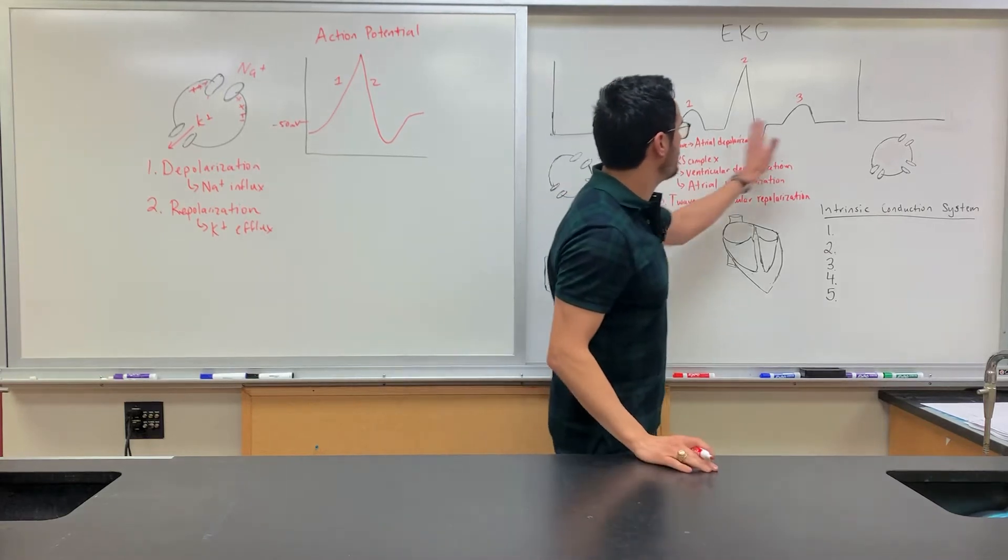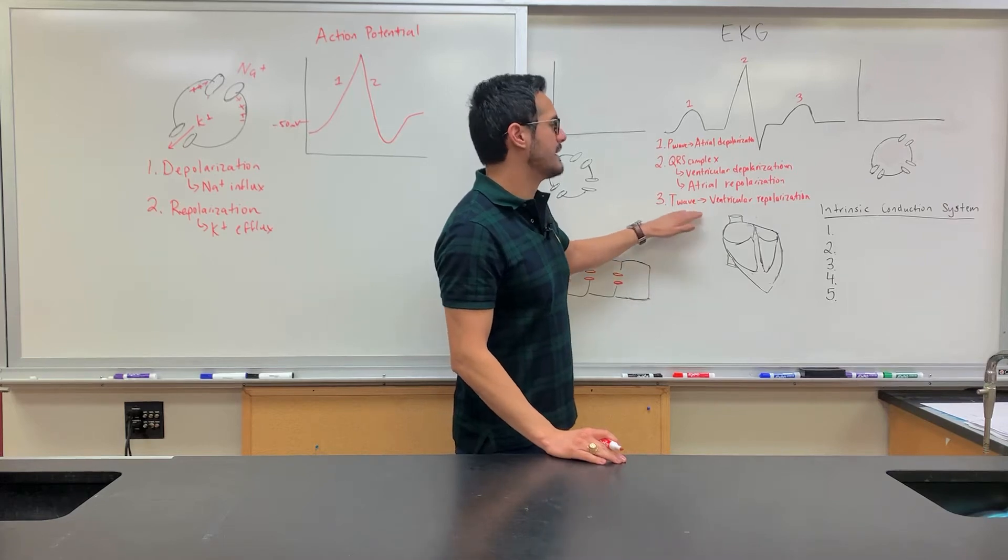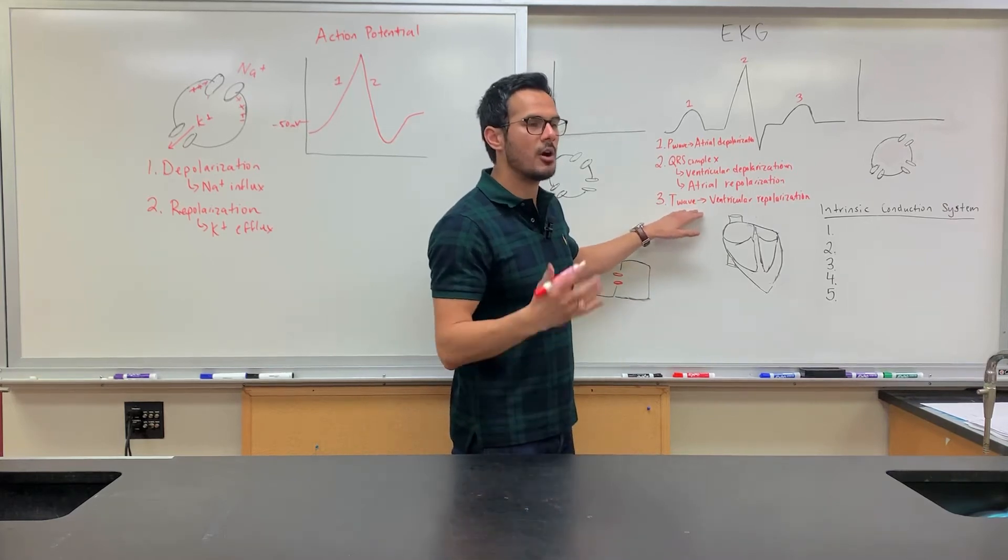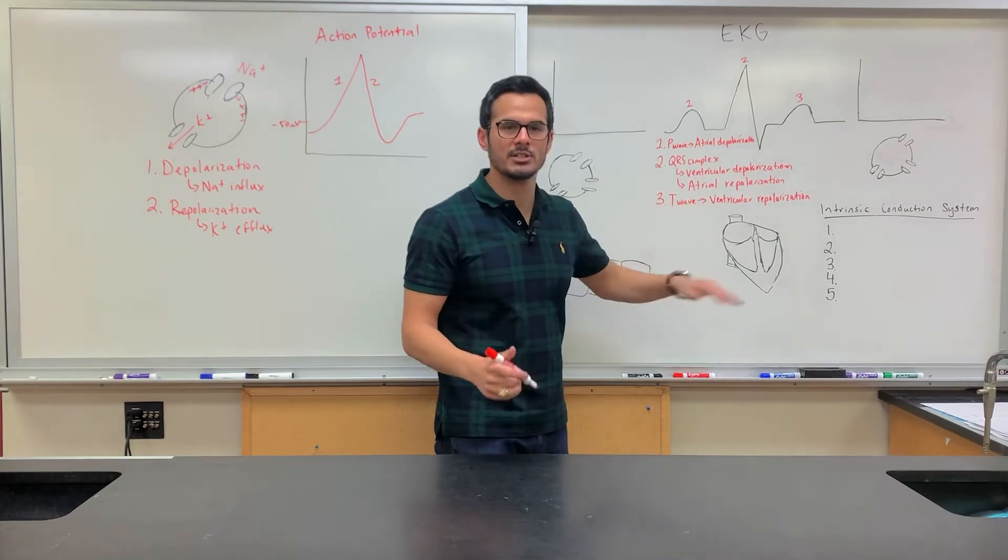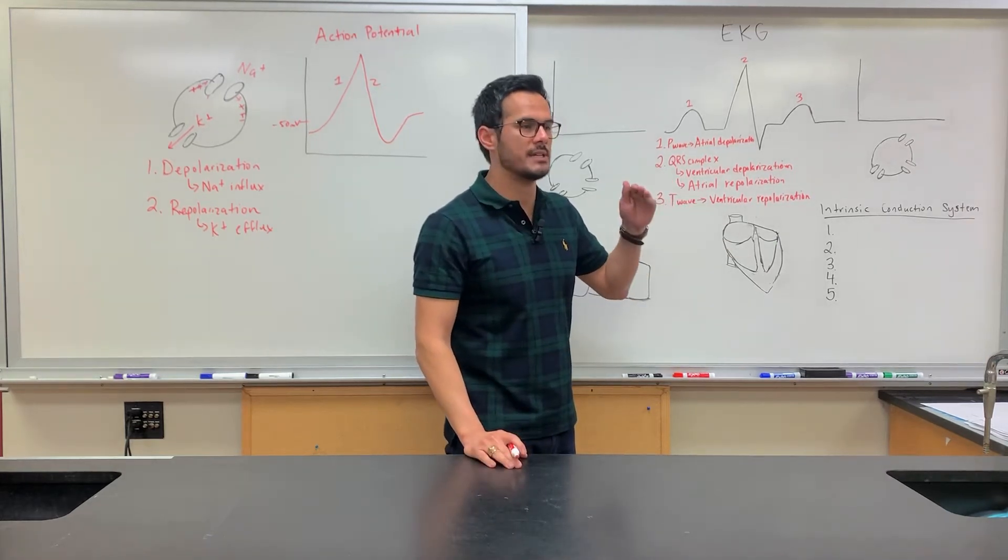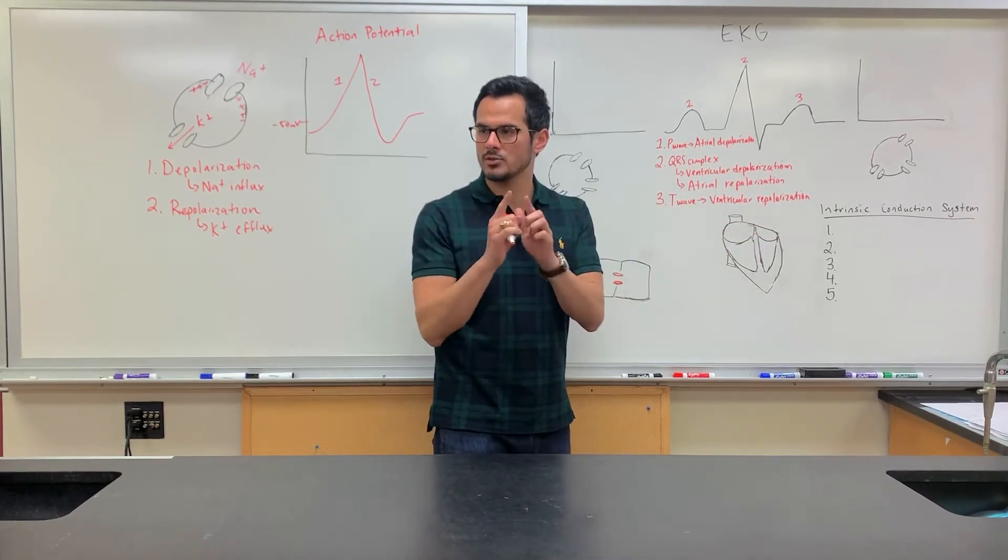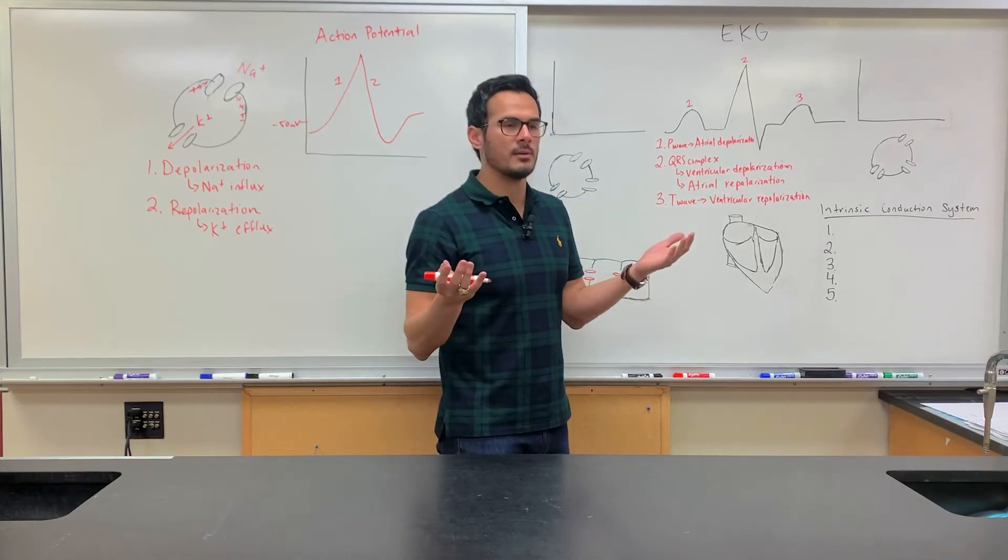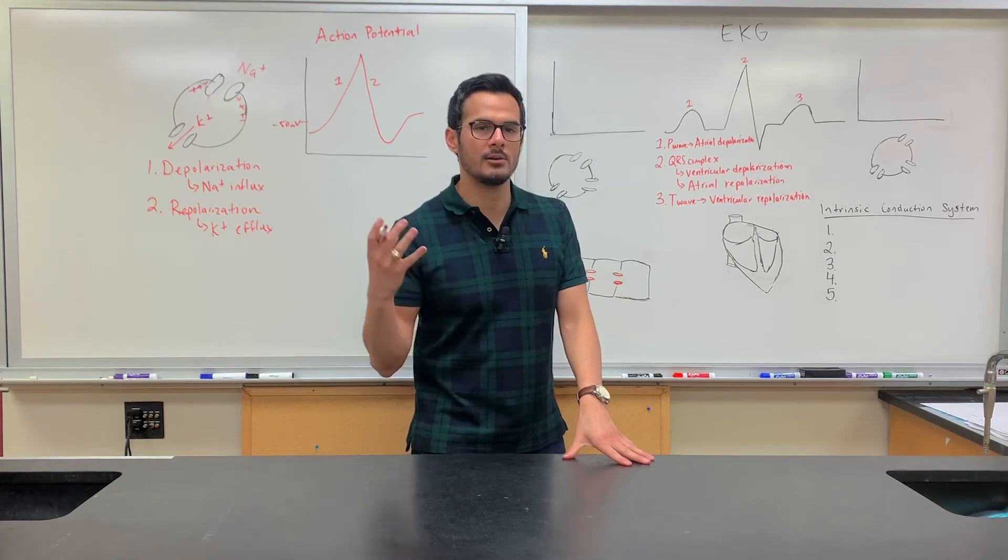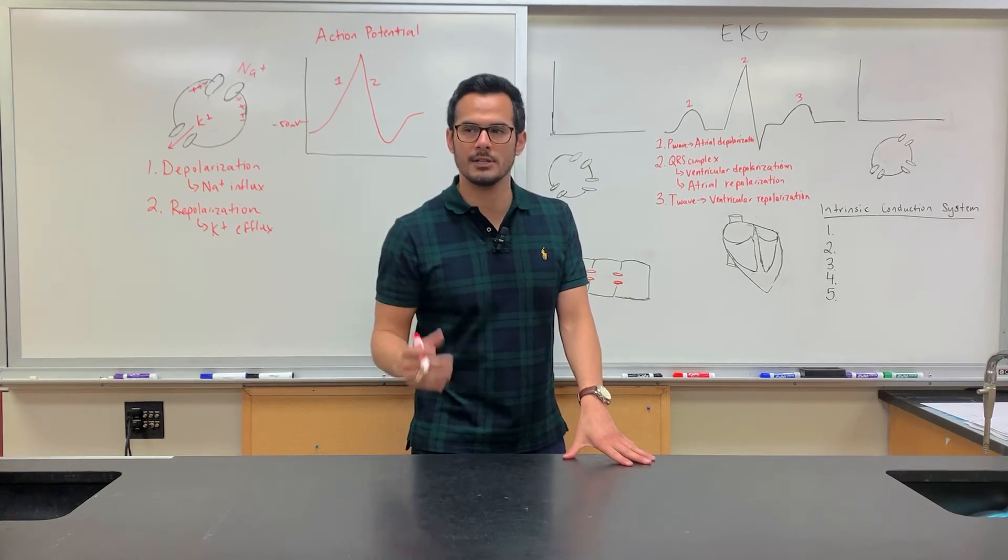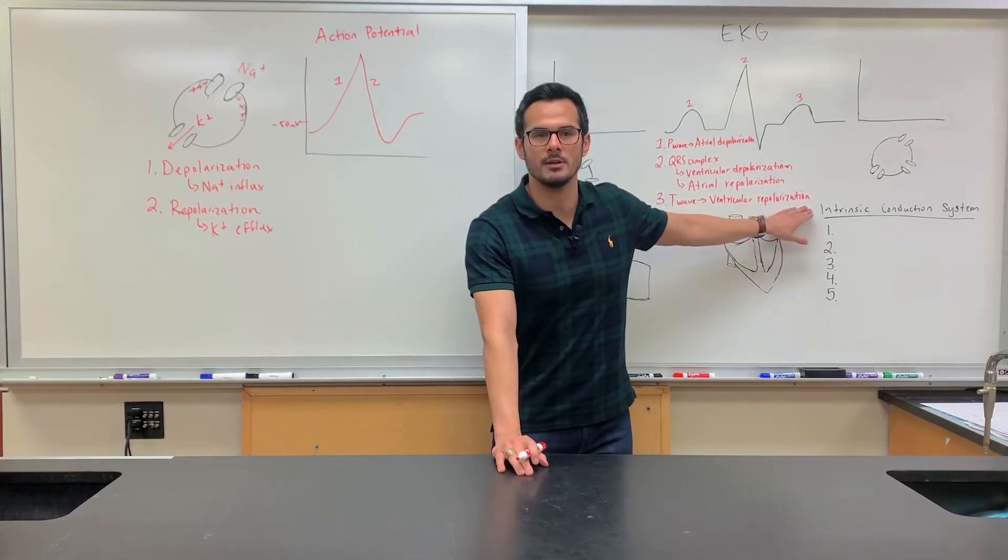So some of the basics of an EKG. But then what sends the signals through the heart? Because remember, the heart muscle cannot contract unless it's receiving the electrical impulses. Remember from AMP one, we learned about the cross bridge cycle and how muscle shortens and lengthens. But what are the components of the heart that are going to allow it to beat? The electrical conduction system. We call it the intrinsic conduction system.